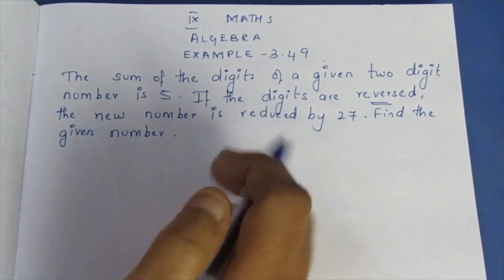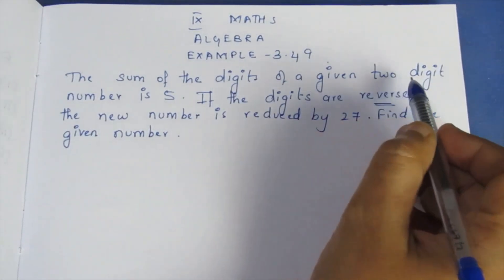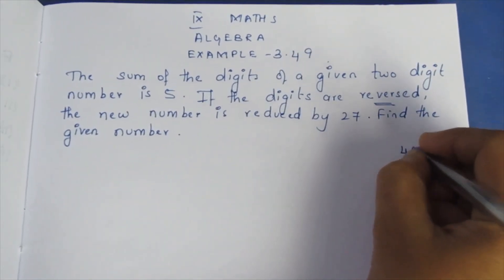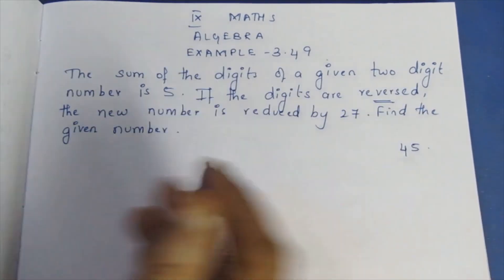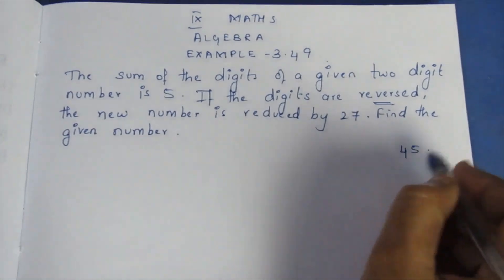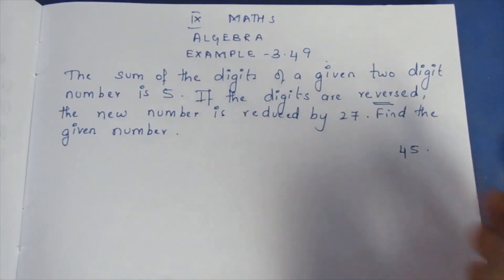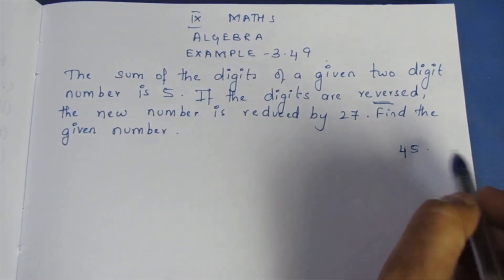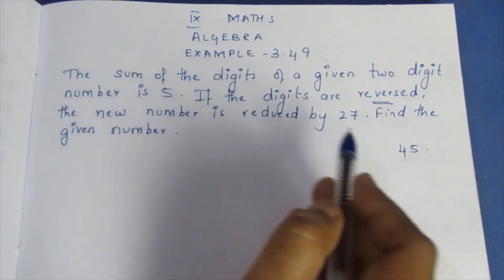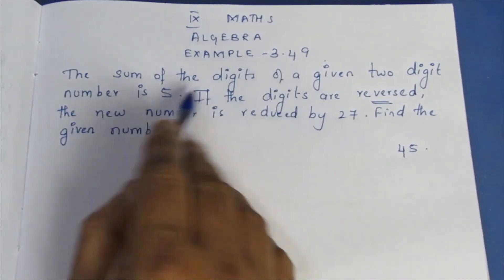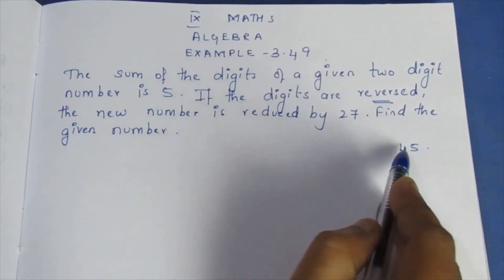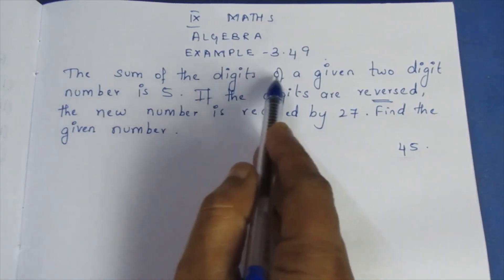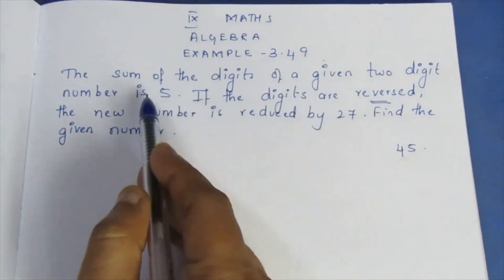Look at the two-digit number — there are two digits. The sum of the two digits of the number is 5. For example, if the digits are 4 and 5, then 4 + 5 = 5. That is the condition: the sum of the two digits equals 5.